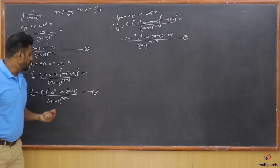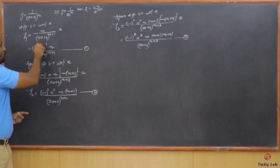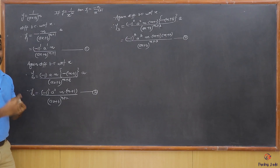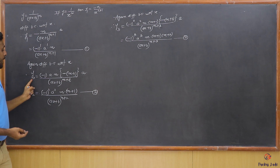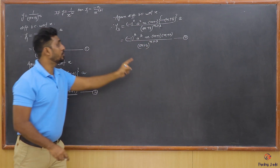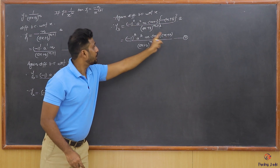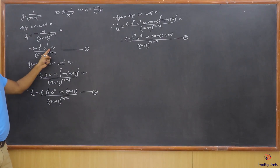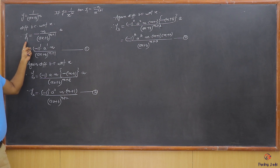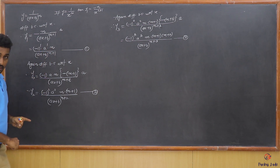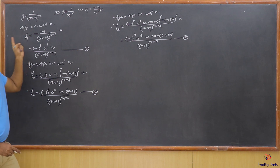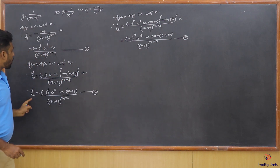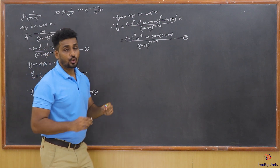Observe the pattern: y3 has (-1)^3, y2 has (-1)^2, y1 has (-1)^1. Similarly, y3 has a^3, y2 has a^2, y1 has a. For the product terms: y1 has one term (m), y2 has two terms (m, m+1), y3 has three terms (m, m+1, m+2). The last term is always one less than the order of the derivative. In the denominator: y3 gives (ax+b)^(m+3), y2 gives (ax+b)^(m+2).